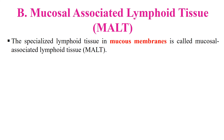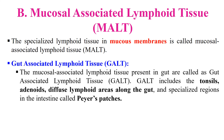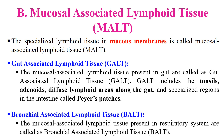The second type are mucosal-associated lymphoid tissues (MALT) — specialized lymphoid tissues in connection with mucous membranes. There are several types of MALT. First, gut-associated lymphoid tissue (GALT), present in the gut. GALT generally includes tonsils, adenoids, diffuse lymphoid areas along the gut, and specialized regions in the intestine called Peyer's patches. Similarly, bronchial-associated lymphoid tissue (BALT) refers to mucosal tissues associated with the respiratory system.